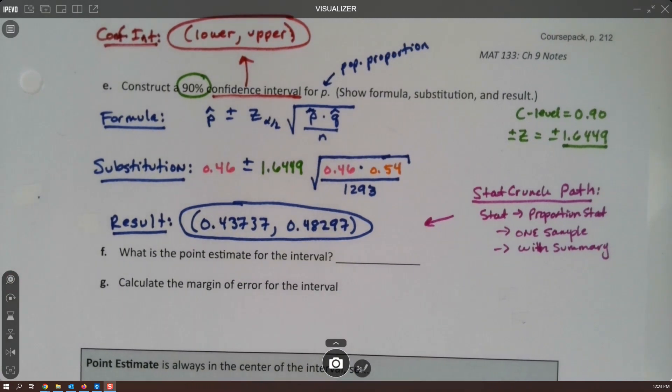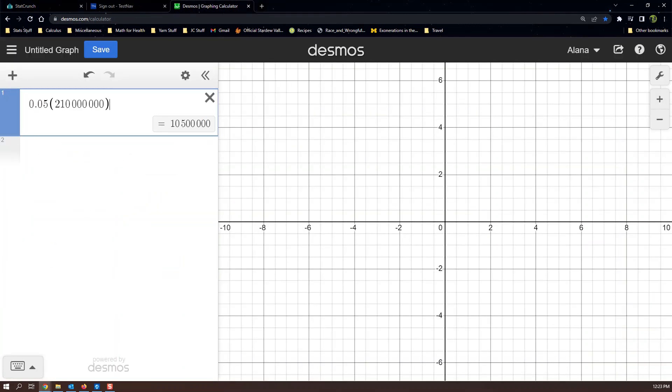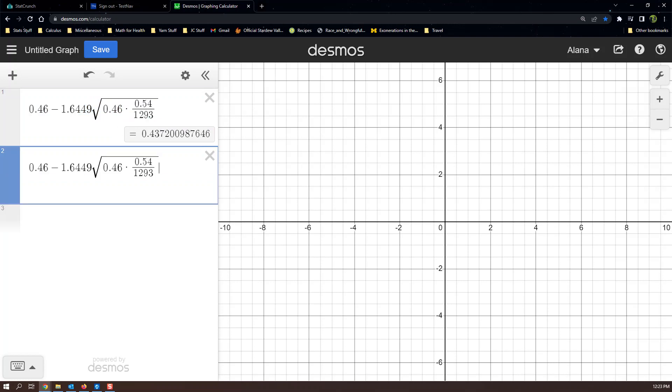Now a couple more things. If you type in the original formula into Desmos, you might get a slightly different answer, and that's because of rounding. So let me type that just so you can see. You don't have to do this, but just so you guys know. So if I take 0.46 minus 1.6449 times the square root of 0.46 times 0.54 divided by 1293, there you go. So 43720 that way. And then I can copy and paste and change it to a plus, and it's 48279. So you can see there's a little bit of rounding error going on. So I try to know what students are doing and accept both answers. I think it's just easier to type in StatCrunch than to do this, but knock yourself out.